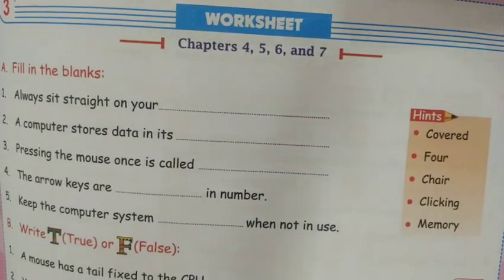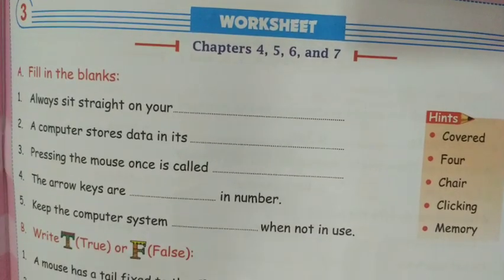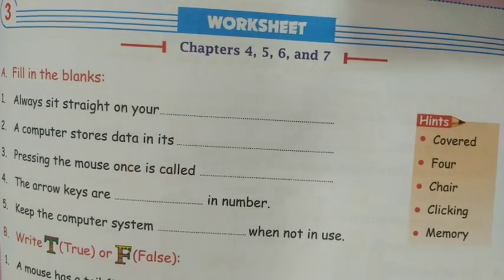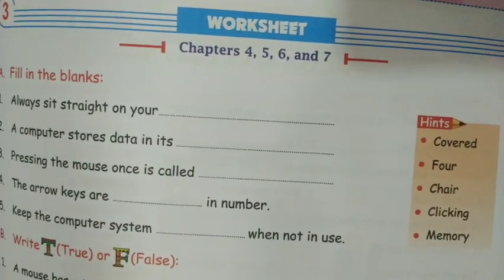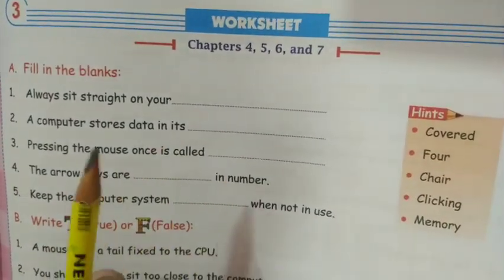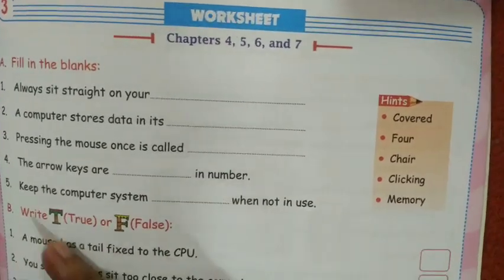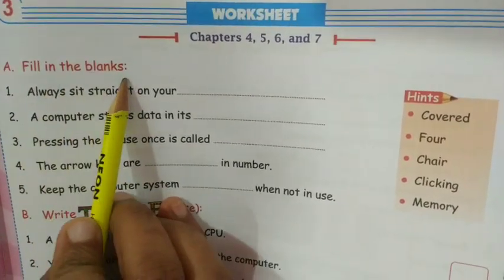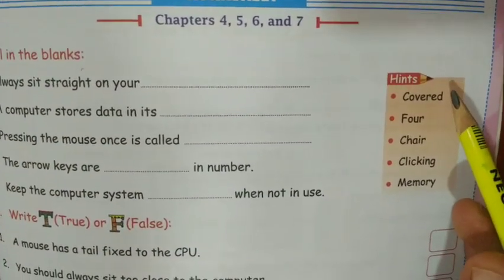Good morning students. In today's video we are going to discuss worksheet number 3, which is on page number 57. This worksheet covers chapter numbers 4, 5, 6, and 7. We have already completed this back exercise in the chapters. First is fill in the blanks — you can check the spellings of the fill-ups from the right side.